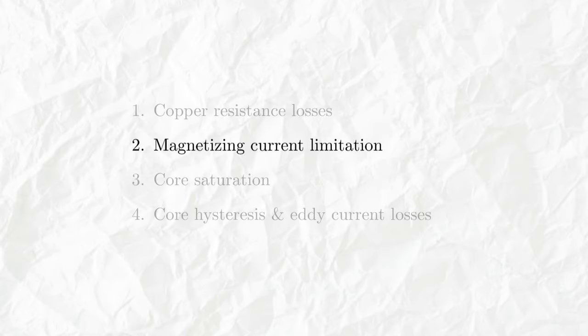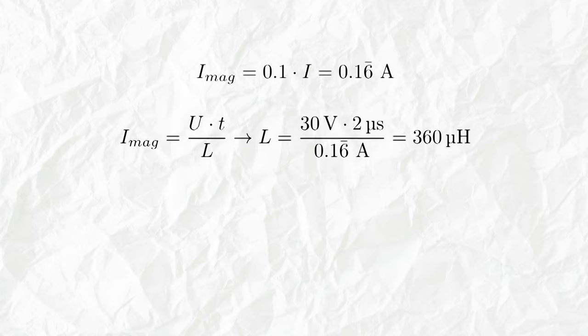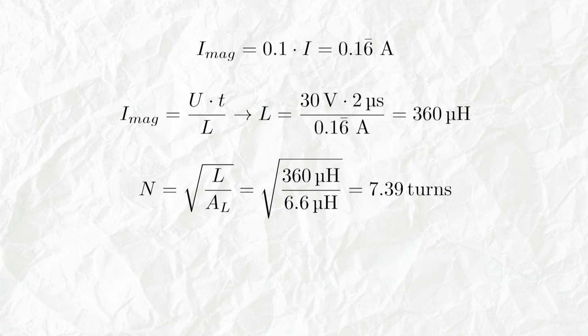The second point is limiting the magnetizing current. In general the rule is to keep it at 10% of the maximum power current. Knowing the input voltage and the frequency we can find what the primary inductance is to keep this current as low as we want it. Knowing the inductance factor of our core, we can find what the number of turns on the primary has to be to achieve that desired inductance.